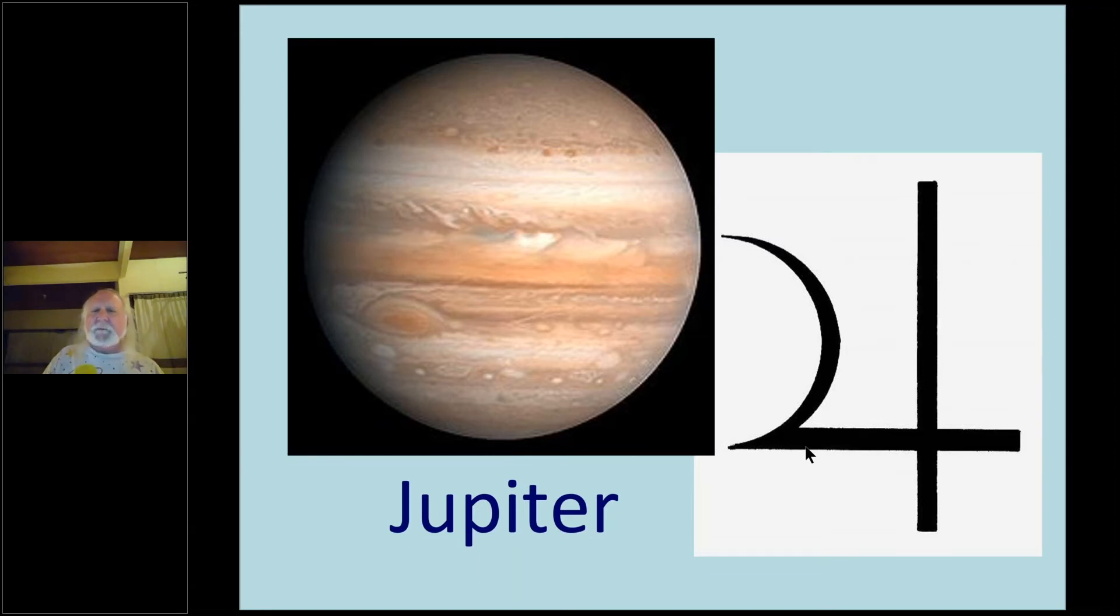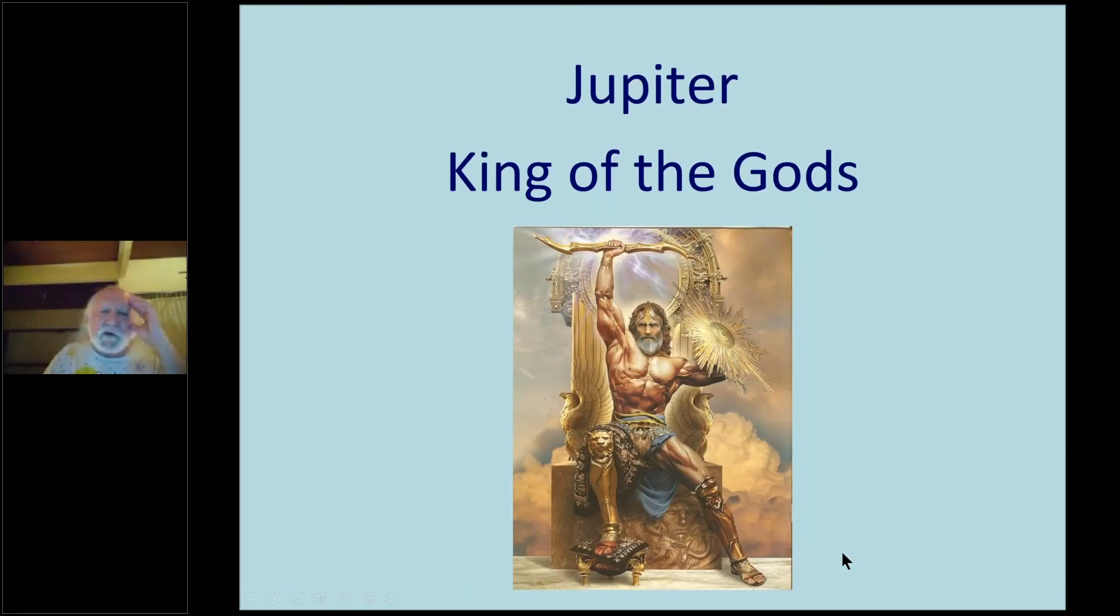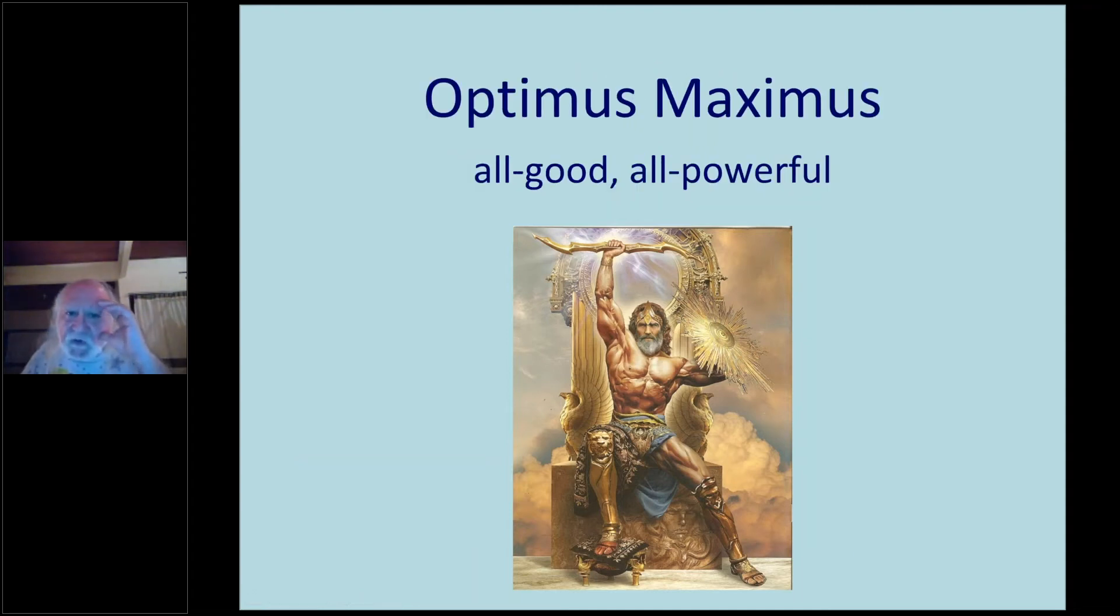If Jupiter was a little bit bigger or if its chemistry was slightly different, it might have reached critical mass and become a second star in our little neighborhood. Jupiter is considered to be the king of the gods. In Latin, it was Optimus Maximus, the all-good, all-powerful. I sometimes say with tongue-in-cheek that Jupiter doesn't have a shadow because everything about it is positive.